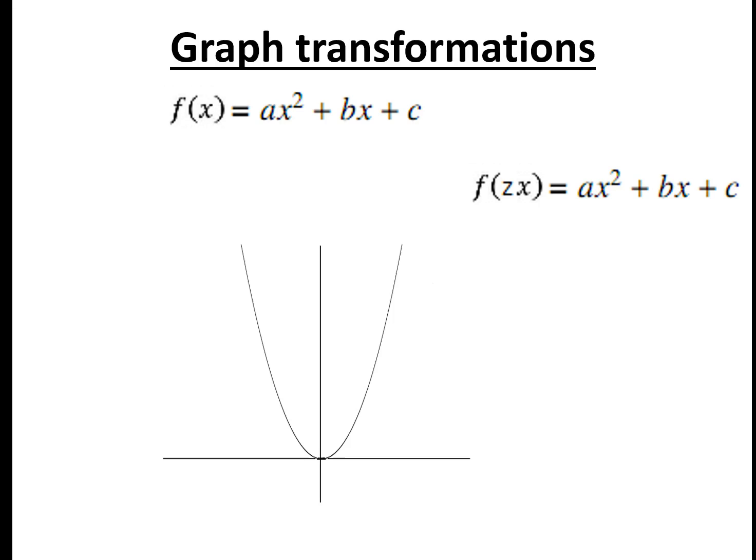And you can check whatever something looks like by just subbing in zx instead of x. So this equation here is slightly wrong, it should be a brackets zx squared plus b brackets zx plus c. And if you plug the numbers in then you'll see how things come out at different points and you can see that it's shrank.